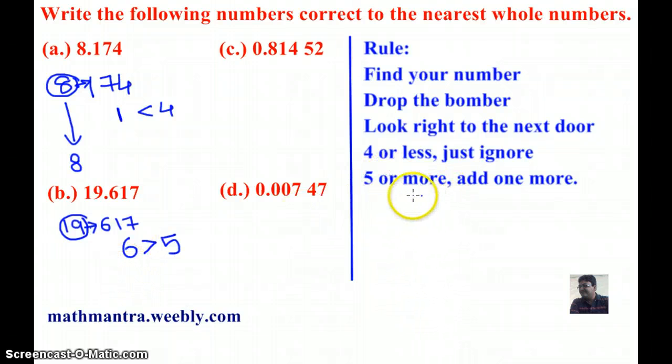to the rule, if it is greater than 5 or equal to 5, I must add 1 more. So I am going to add 1 to 19 and I get 20, which is my answer.